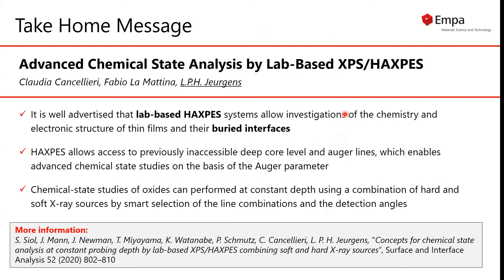which enables advanced chemical state studies based on the Auger parameter. The chemical state studies of oxides or nitrides can be performed at constant depth using a combination of hard and soft X-ray sources by smart selection of the line combinations and possible variations in the detection angle. With this, I thank you for your attention and I am open to answer your questions.